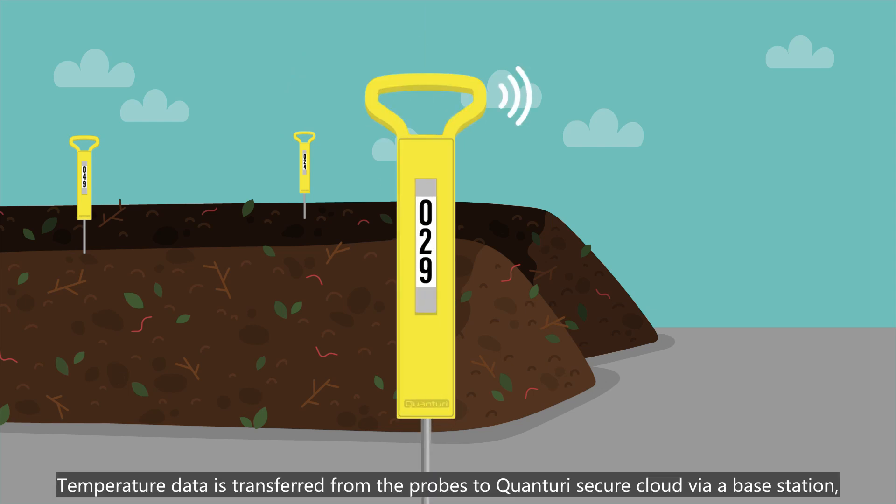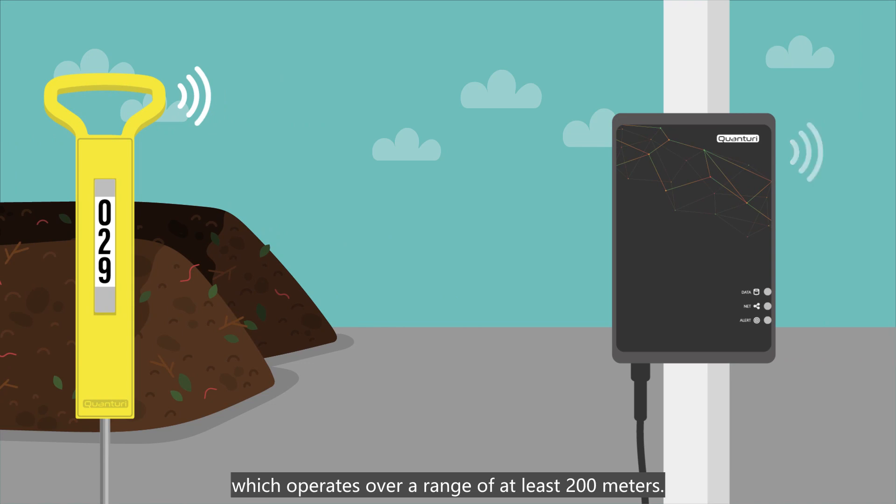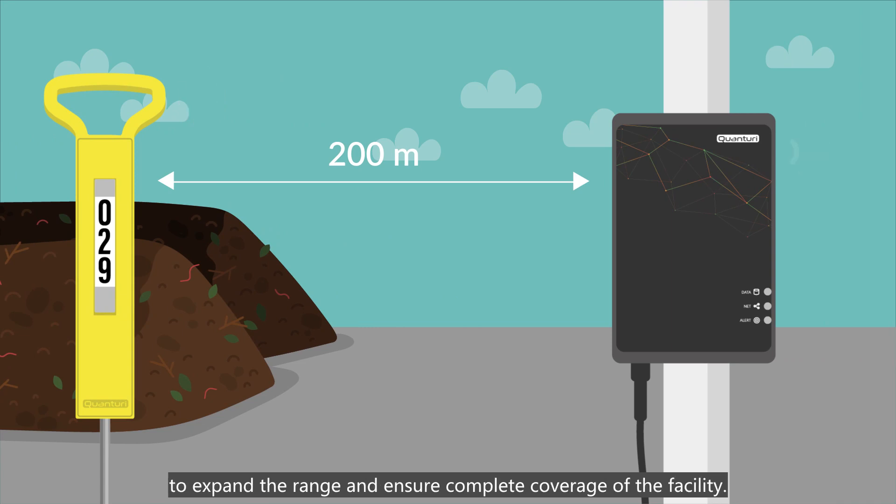Temperature data is transferred from the probes to Quantory Secure Cloud via a base station which operates over a range of at least 200 meters. Repeaters and additional probes can be installed at any time to expand the range and ensure complete coverage of the facility.